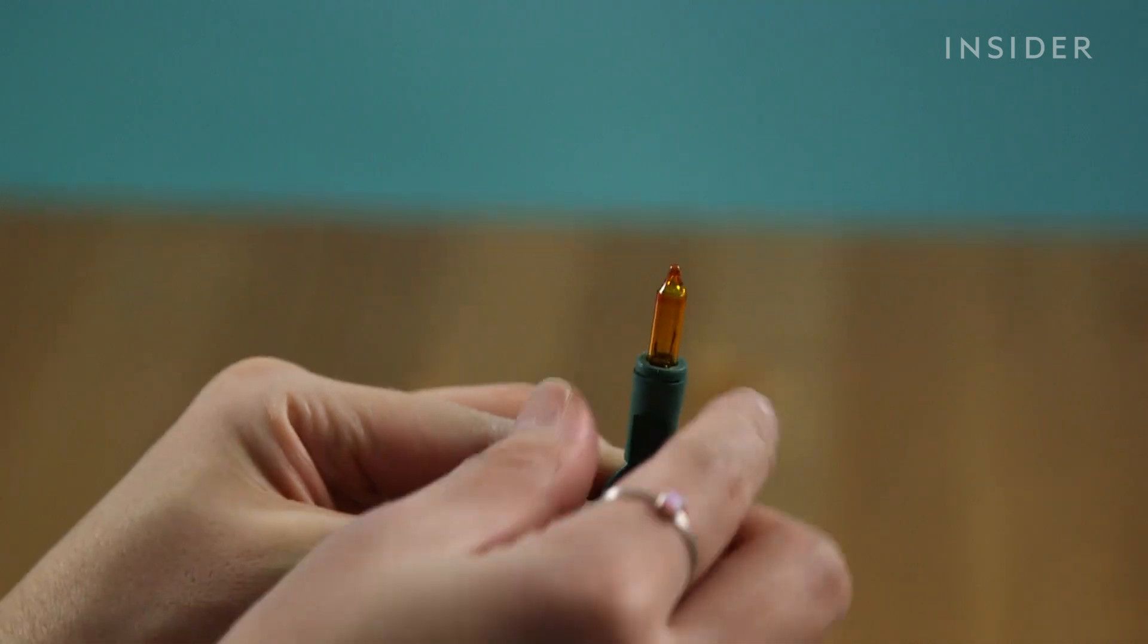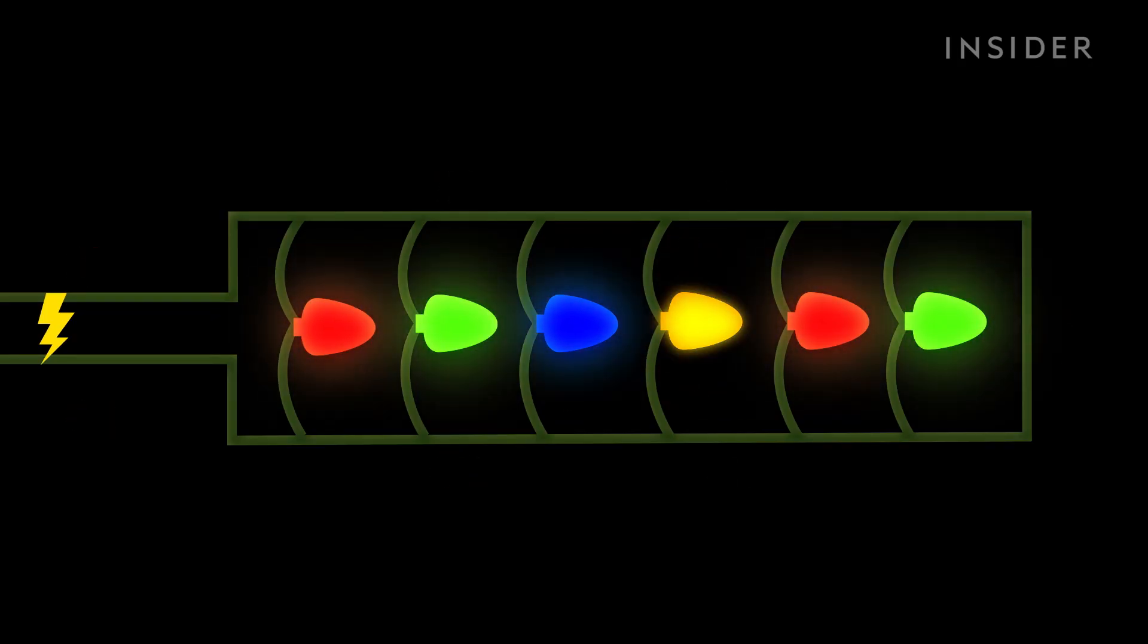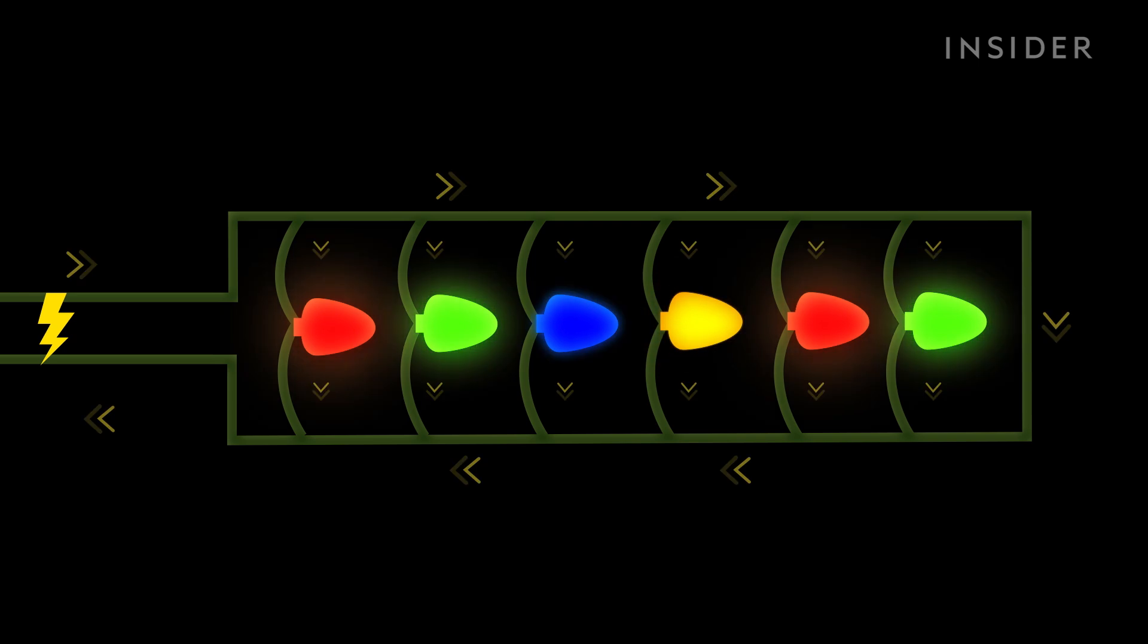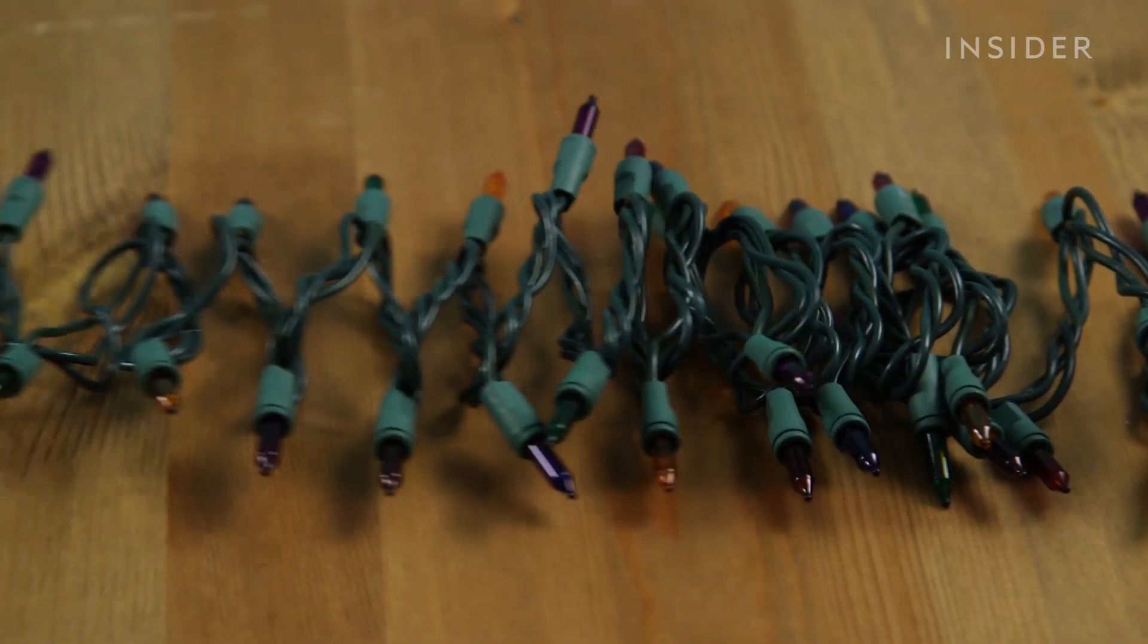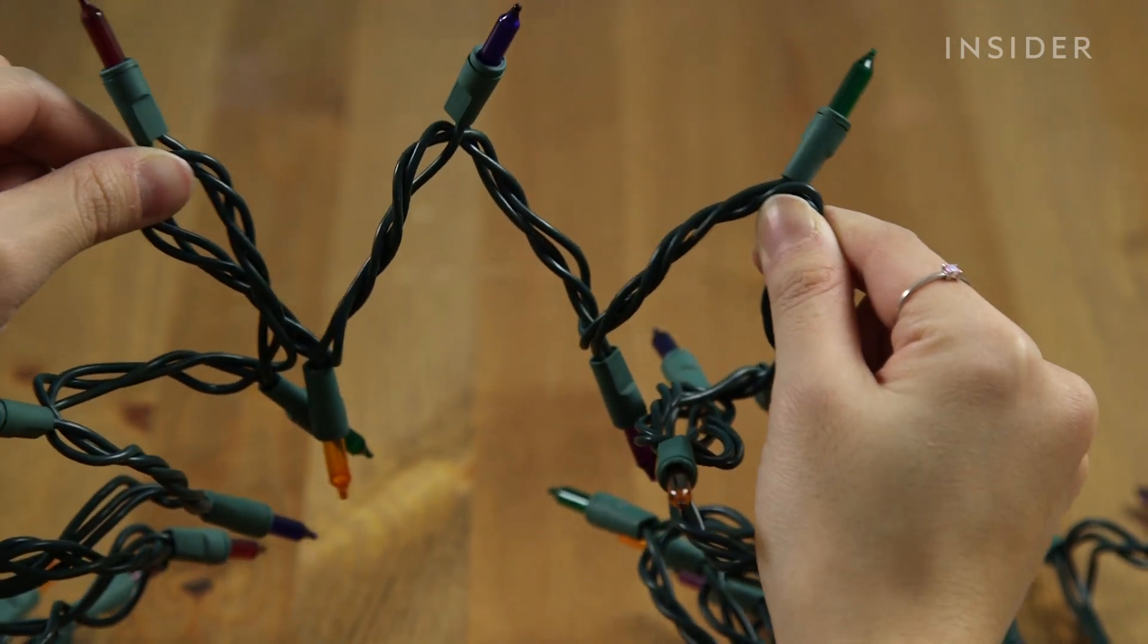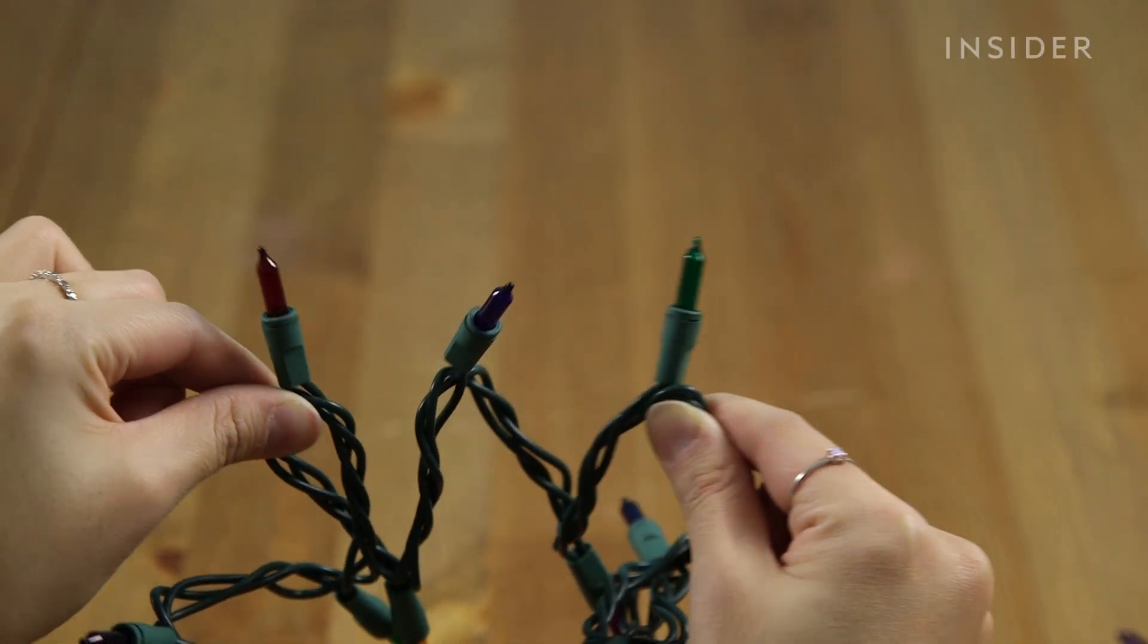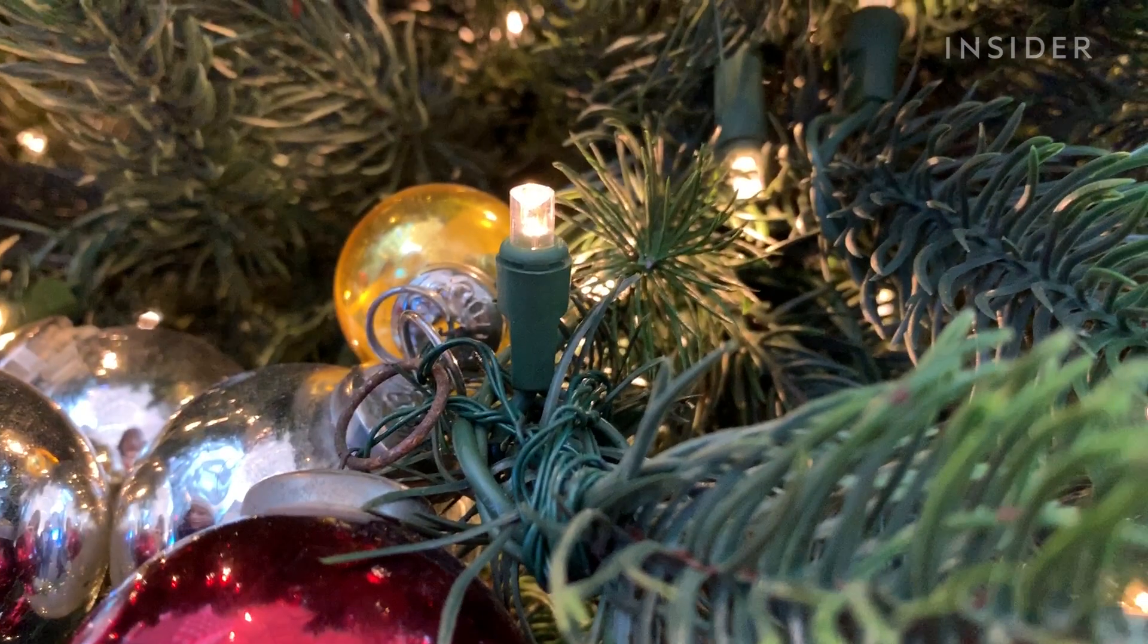The other type of circuit light strands use is a parallel circuit. In this setup, each bulb is on its own circuit to the power source. The current is divided into paths, and since there is a separate path for each light, the rest of the bulbs will stay lit even if one goes out.